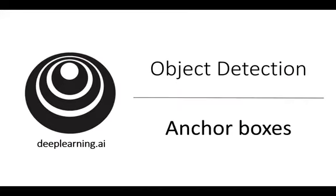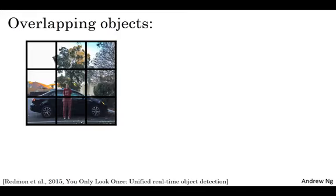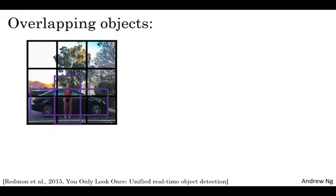You can use the idea of anchor boxes. Let's start with an example. Let's say you have an image like this and for this example, I'm going to continue to use a three by three grid. Notice that the midpoint of the pedestrian and the midpoint of the car are in almost the same place, and both of them fall into the same grid cell.